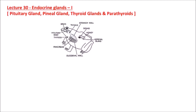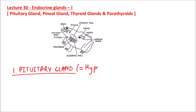Welcome to Studio Biology. In this video I am going to discuss the endocrine glands in frog. First of all, the pituitary gland, also known as hypophysis cerebri. Here is the location of the pituitary gland on the ventral surface of the brain. It is also known as the master endocrine gland and it is divisible into three lobes.